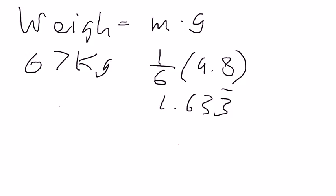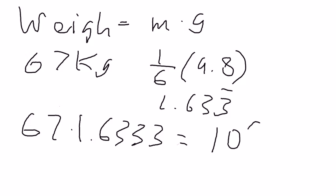So, now that gravity is 1.633, we're going to take 67, and multiply it by 1.6333. And that should give you 109.4, sorry, 109.4 newtons. So, that's 2B.